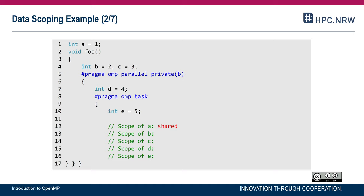What about b? b is declared within foo, so it's a variable of automatic storage location. We encounter a parallel region — it would be shared within the parallel region because it's declared before the parallel region. But here we have the private clause, so b is private — one instance of b per thread. Now we encounter the task construct in line 8, and within the task there is a new b for each task created, because b will be made firstprivate by the rule just explained. So here we have one b per thread, and in addition one b per task. There is exactly one task created by each thread encountering the task construct in line 8, which is each thread within the team executing the parallel region.